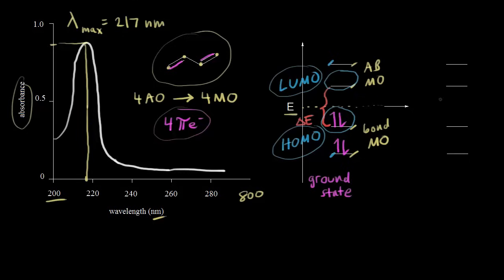When we shine light on the molecule, we're talking about the excited state of butadiene. Two pi electrons stay in their orbital, one pi electron stays in place, and one pi electron absorbs energy from the light and is promoted to a higher energy level — it goes from the HOMO to the LUMO. The molecule had to absorb a specific amount of energy to make that transition, and that energy came from the light.